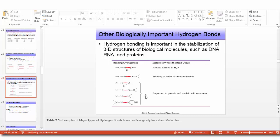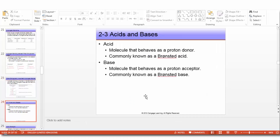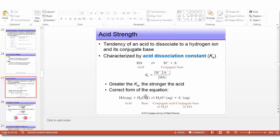Now we move to section 2-3: acids and bases. Generally speaking, an acid is defined as a molecule that behaves as a proton donor, known as a Brønsted acid, whereas a Brønsted base is a molecule that behaves as a proton acceptor.